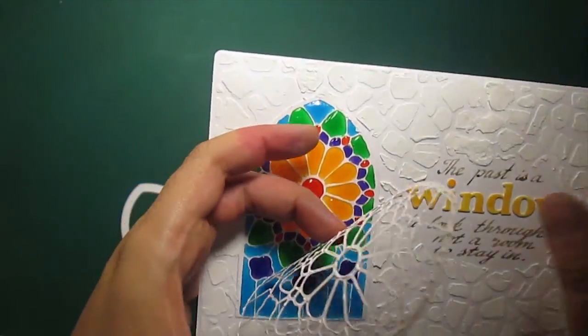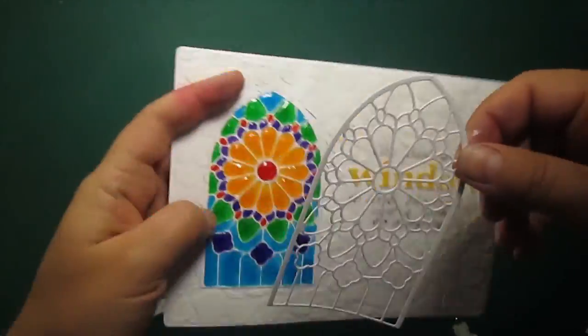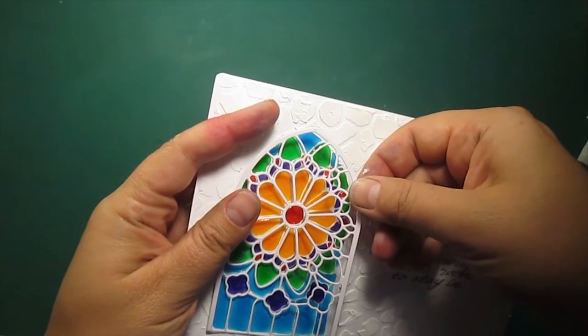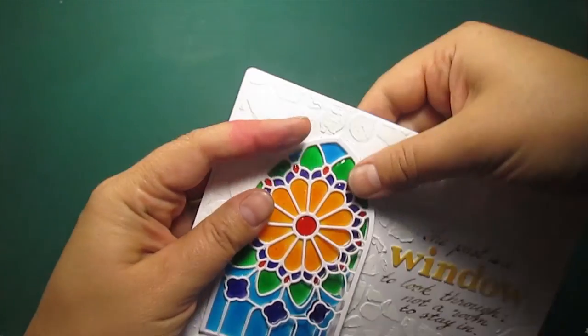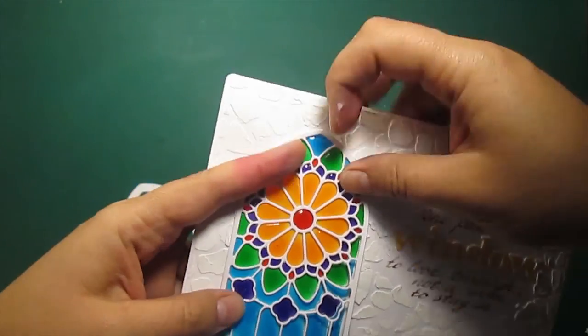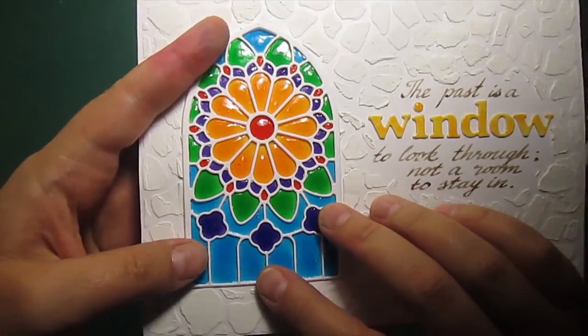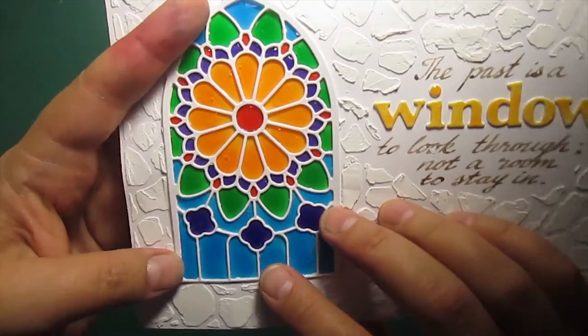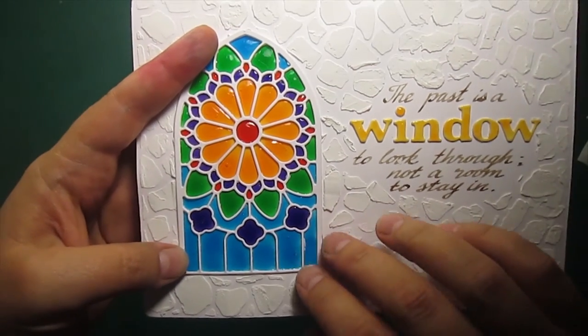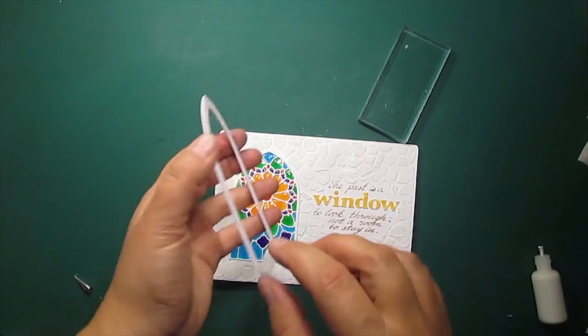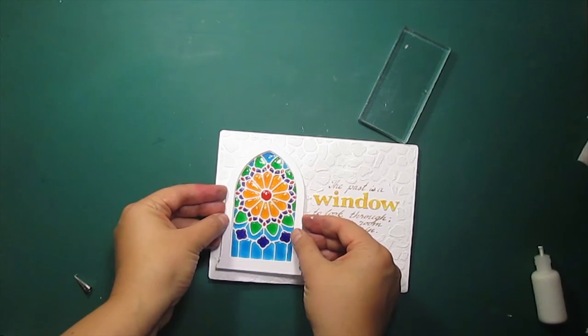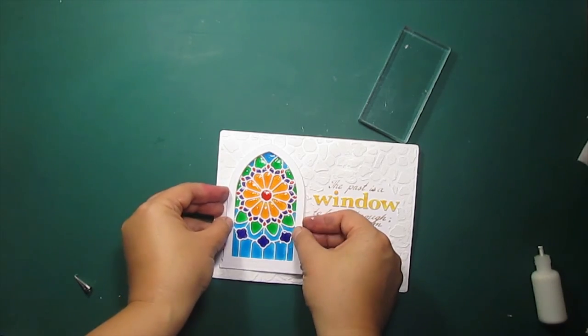I am going to stick another window die cut on top and this will hide all the imperfections. Now the white lines are totally crisp and clean again. I have made a triple layer window casing and I am putting it on top.